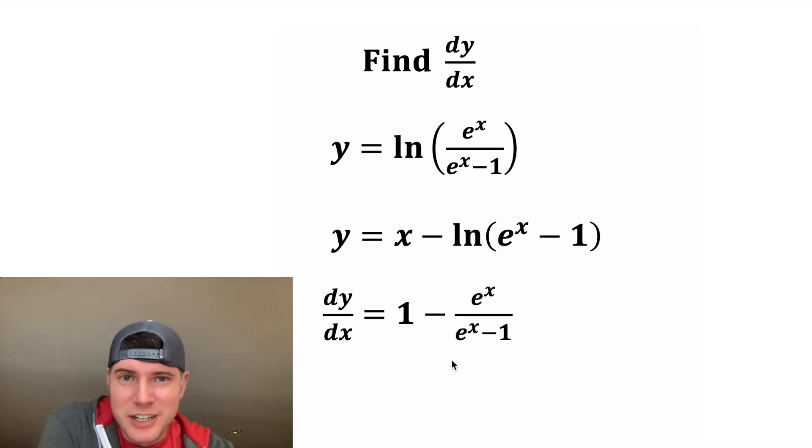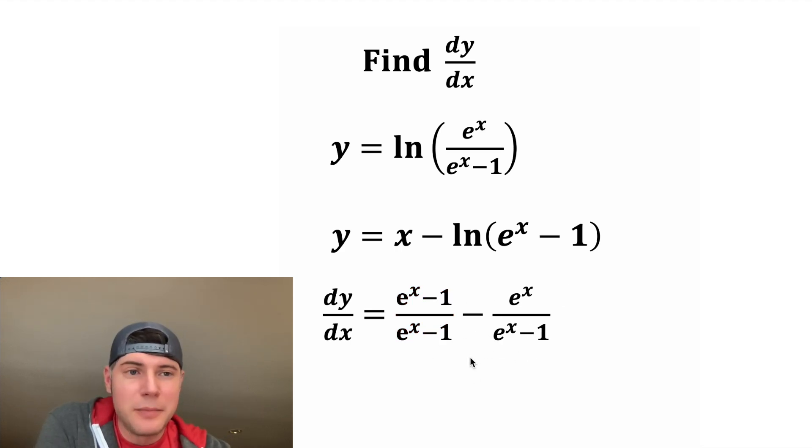So now we're technically done, but we can clean it up a little bit. Let's give these two terms a common denominator. We'll multiply top and bottom by e to the x minus 1. So now this times 1 is just this, and we can smush these together. These have a common denominator, so we can combine them into a single fraction, where we just do this minus this.